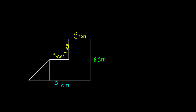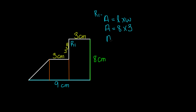Now I already know the measurements for rectangle number 1. The measurements are 3 by 8. So let's find the area for rectangle number 1. The area is equal to length times the width. The length is 8 centimeters and the width is 3 centimeters. So when you multiply 8 times 3, we get 24 centimeters squared.